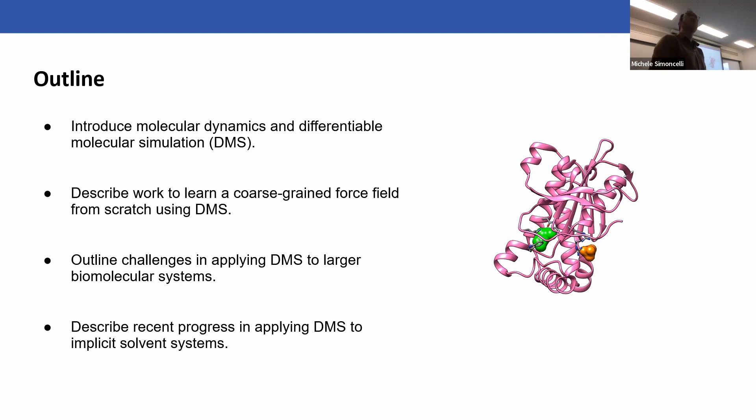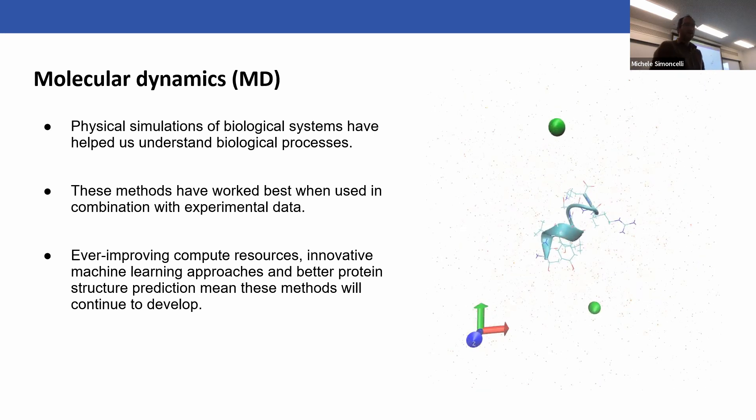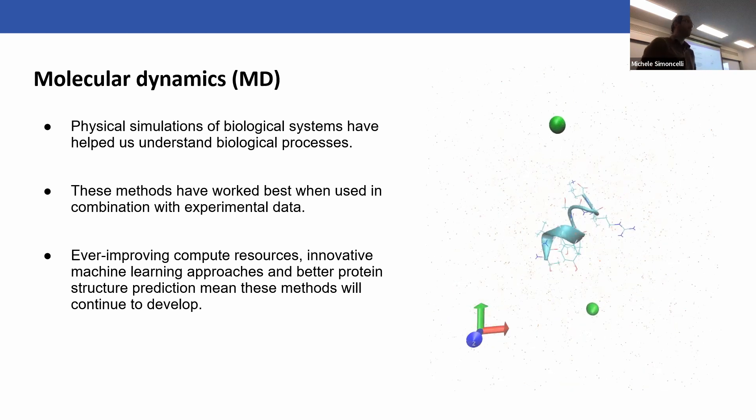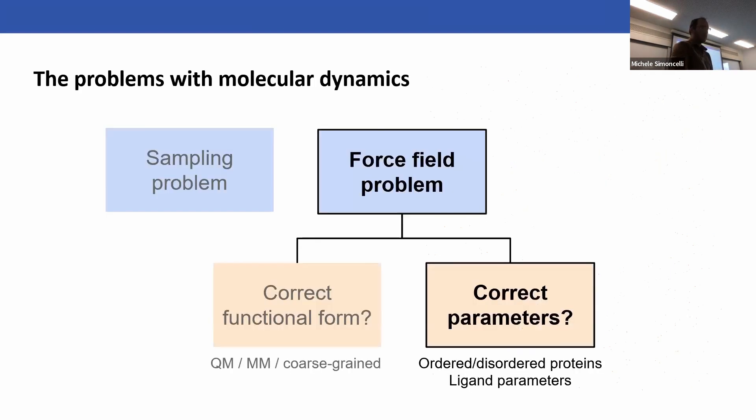Most of this audience has probably heard of molecular dynamics. My background is more biology, and I think it's fair to say that physical simulations of biological systems have really helped us understand biological processes. These methods work best when used in combination with experimental data, giving mechanistic understanding that experimental approaches can identify or even pointing to new experimental directions. Ever improving compute resources, new machine learning approaches, and better protein structure prediction with AlphaFold mean that simulating biomolecules with molecular dynamics is just going to become more and more important.